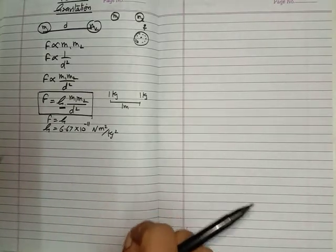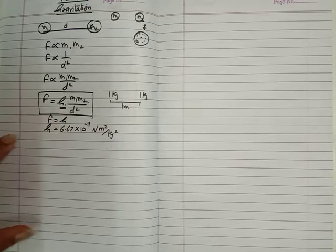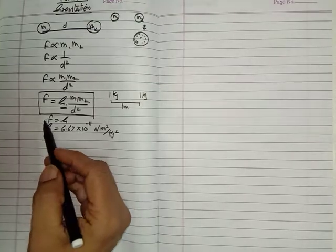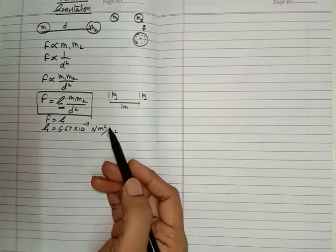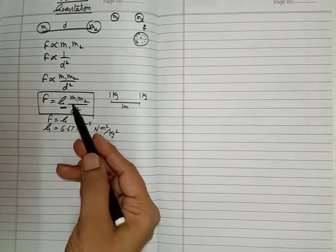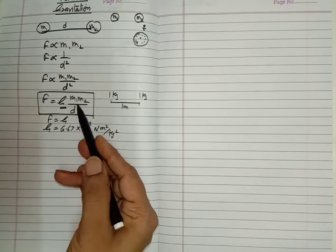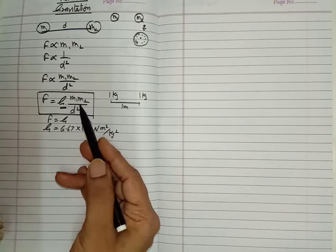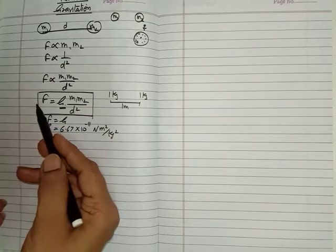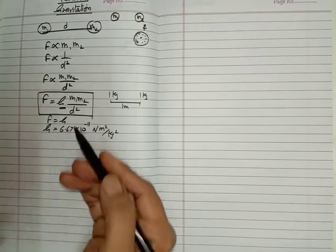There are some numericals based on this formula, so you should do practice of these numericals. By this formula we can find the attraction force between the earth and the moon, or the earth and the sun, by finding the masses of the earth and the sun and the distance between the centres of the earth and the sun, and we can find the force of attraction acting between them.